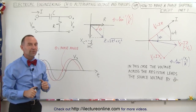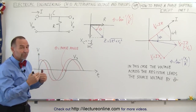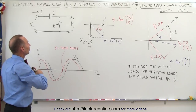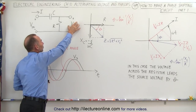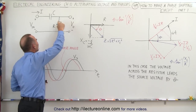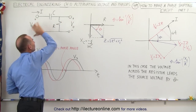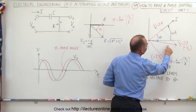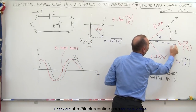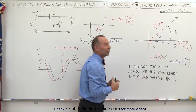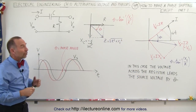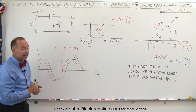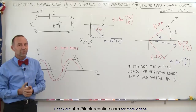Hopefully this makes you understand how this is a phase shifting circuit — how the output voltage, which is the same as the voltage across the resistor, is different from the input voltage, which has the same phase direction as the voltage of the entire circuit, V sub Z. That's a good start, and then we'll show you another type of phase shifting circuit and some examples of how to actually use it.